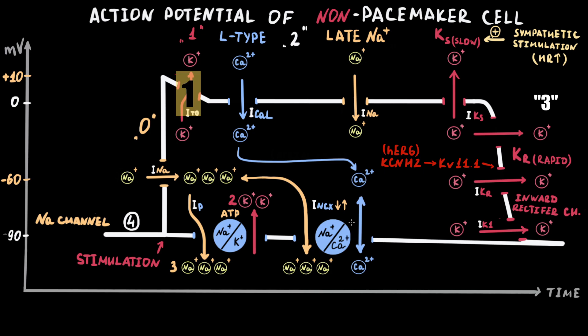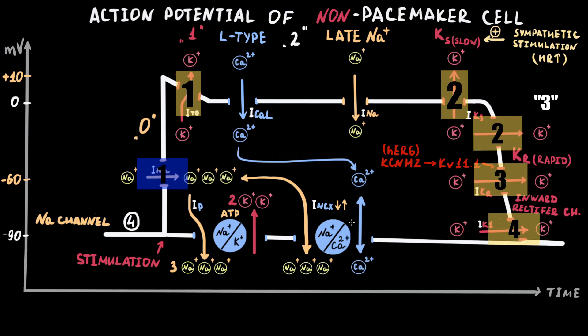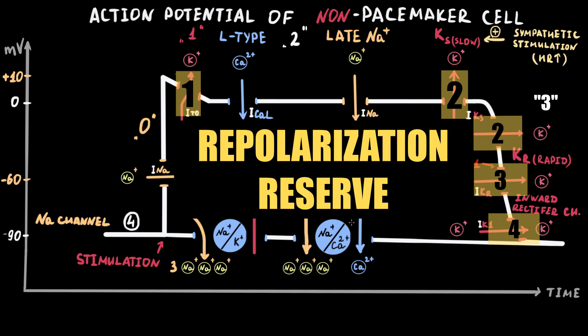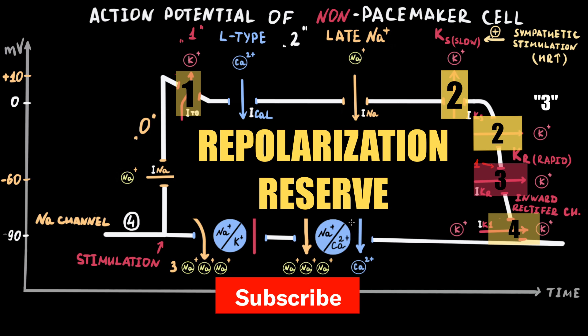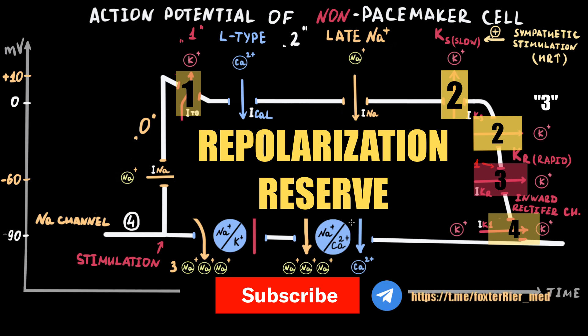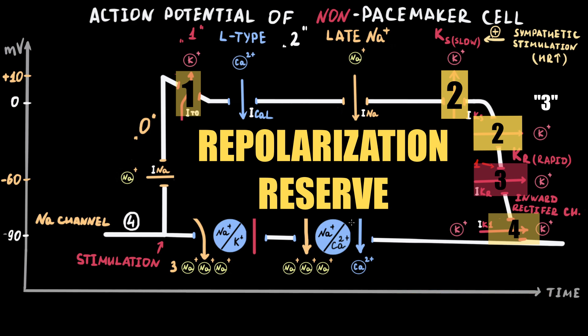As you can see, the number of repolarizing channels is greater than the number of depolarizing channels. As a result, repolarization has built-in redundancy, or reserve, to protect the action potential against excessive duration lengthening — a phenomenon called repolarization reserve. So if some current does not work properly, another repolarization current can compensate by working more powerfully. This repolarization reserve protects against QT interval prolongation and consequently against early afterdepolarizations and triggered activity.